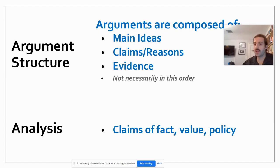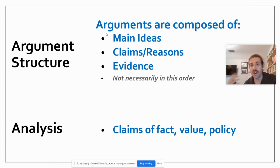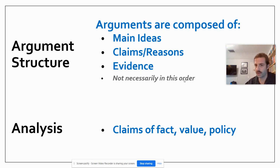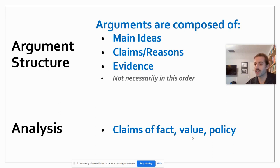Here are the big takeaways: arguments are composed of main ideas or theses, claims and reasons supporting those, and pieces of evidence — not necessarily always in this order. We can analyze claims more deeply and break them down into claims of fact, claims of value, or claims of policy: things we're saying are true or not true, things we're passing a judgment on, and policy meaning we are suggesting something should change.